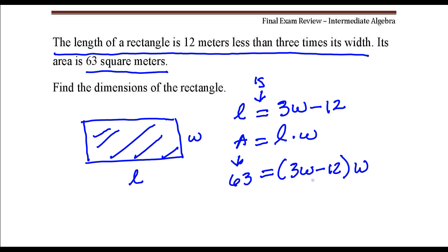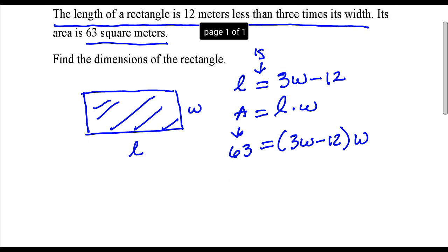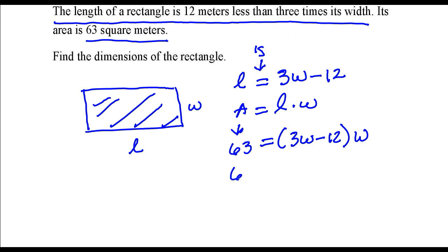And that's length times width is equal to 63 square meters. Okay, so I'm just going to multiply this out. 63 is W times 3W, that's 3W squared, and W times a negative 12, that's minus 12W.